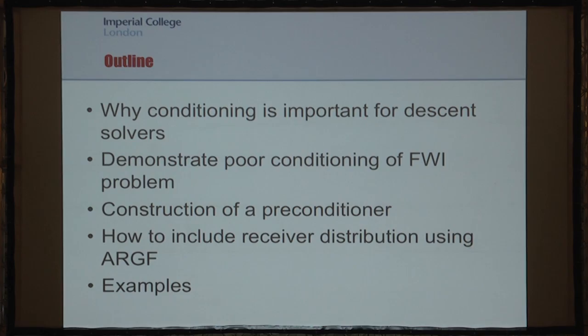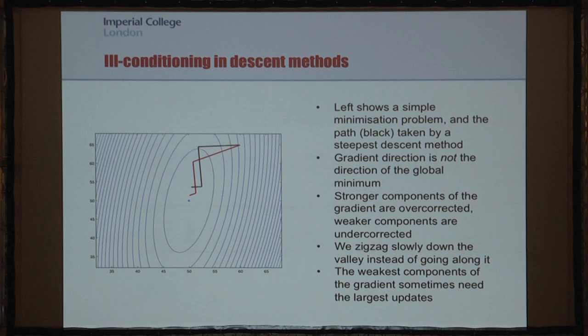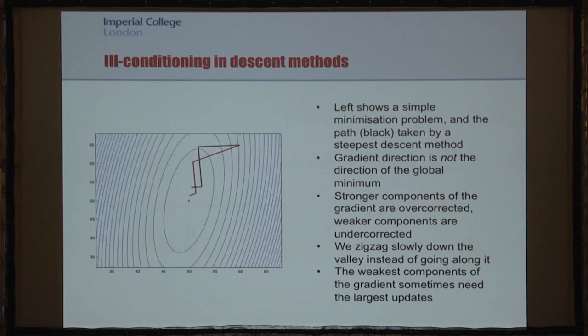Ill conditioning in descent methods is important, as we can see on the left here. We have a very simple two-parameter quadratic minimization problem, and the black path here shows the path taken by a very simple steepest descent solver. As we can see, the root of the problem is that the gradient direction at almost every point in this diagram does not point towards the minimum.